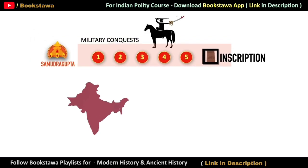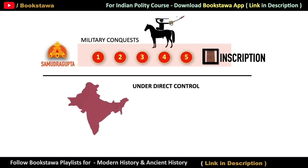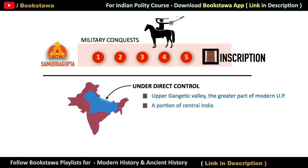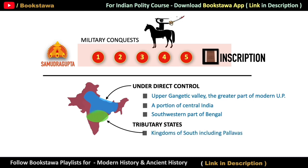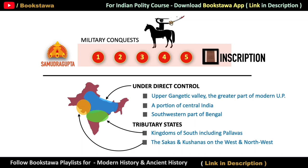Looking at the map, Samudragupta had direct control over a large part of India, mainly in North India. This includes the upper Gangetic Valley and a large part of modern Uttar Pradesh. A large portion of Central India was also under his direct control, along with the south-western part of Bengal. The 12 kingdoms of the south, including the Pallavas, had become tributary states of Samudragupta, as had the Shaka and Kushan rulers living in the western and north-western regions of India.